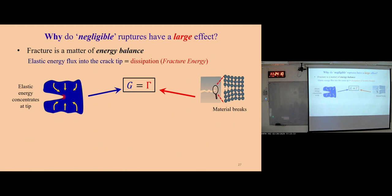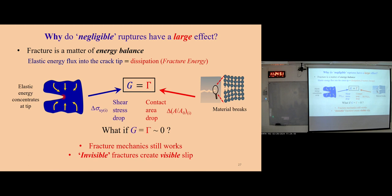Why do such negligible ruptures have such a large observable effect? The natural result from the energy balance G equals gamma says: G is the elastic energy concentrated at the tip, evaluated here by the shear stress drop; and gamma is the fracture energy, which evaluates how many asperities break and is directly connected to the contact area drop. From the measurement, the shear stress drop and contact area drop are pretty small — almost zero. So G equals gamma close to zero: the fracture mechanics framework still works. But this invisible fracture can give us visible slip — it's like slip amplifies everything.